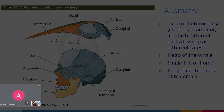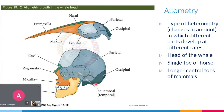Allometry is a type of heterometry — changes in amount of gene expression — but specifically it is where different parts develop at different rates. Gene expression is directly related to how fast a part will grow relative to others. Examples of allometry include the head of whales, the single toe of the horse, and the longer central toe in mammals. We will discuss the first example to understand what allometry is.